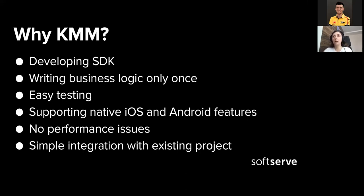There are no performance issues. Shared code written in Kotlin compiles to Java bytecode and also to native binaries for iOS, so there are no performance issues when running your code. Also, simple integration with existing projects means it doesn't matter if you've already started a project — you can create a Kotlin Multiplatform Mobile SDK and share it.